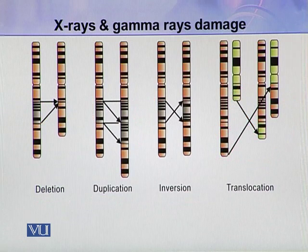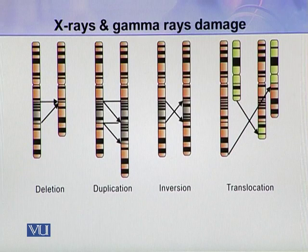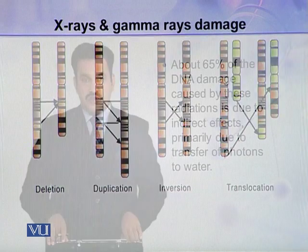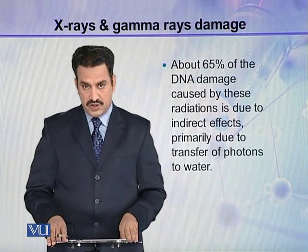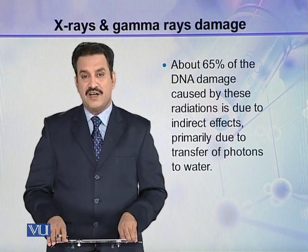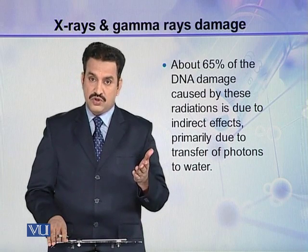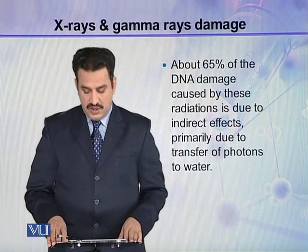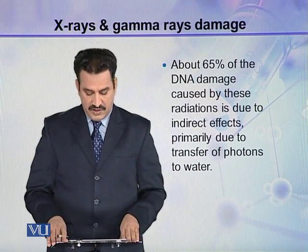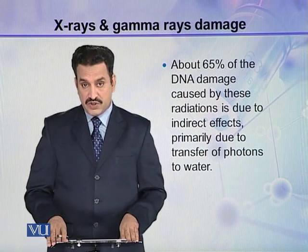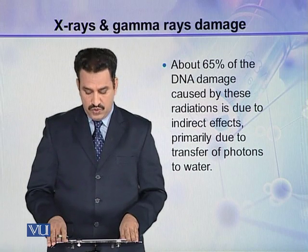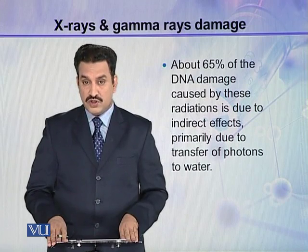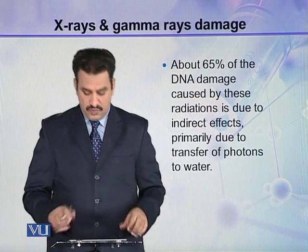About 65% of the DNA damage caused by these radiations is due to indirect effects. So while we have seen the direct effect, the dominant pathway is indirect — primarily due to the transfer of photons from light to water molecules.